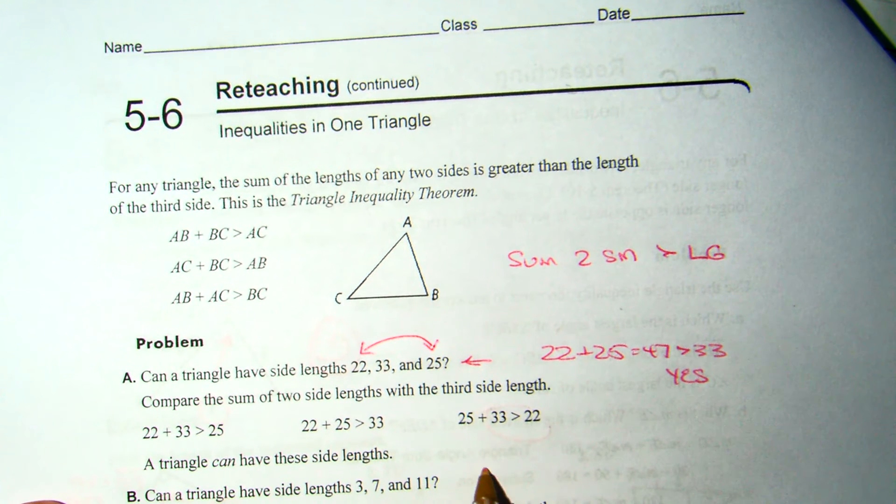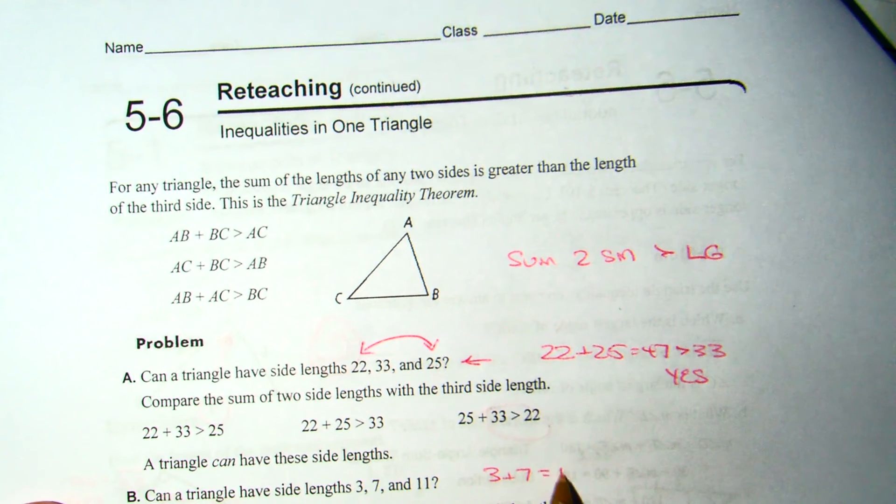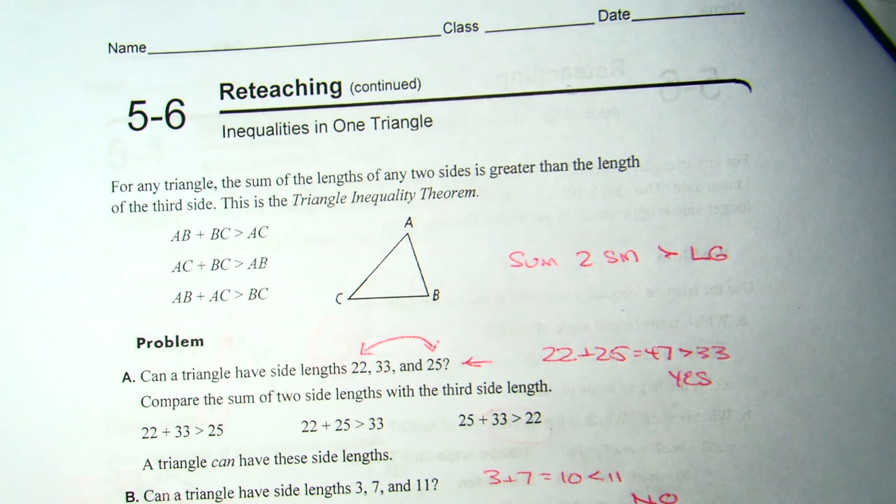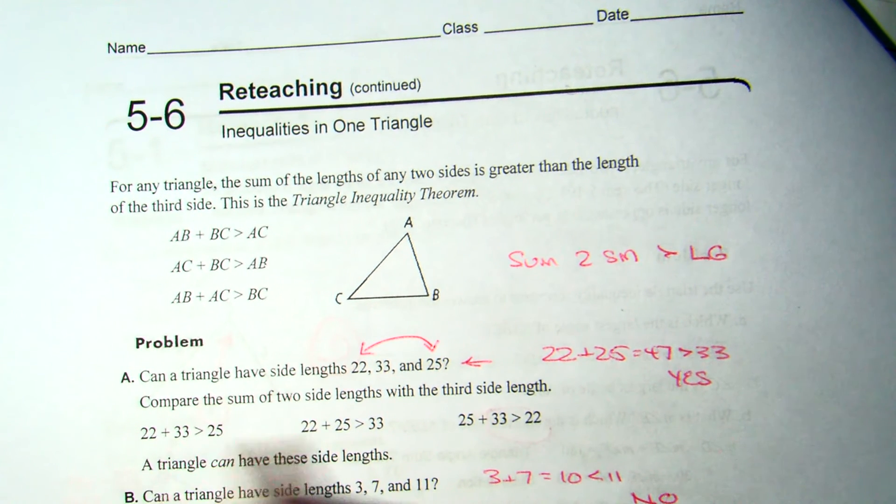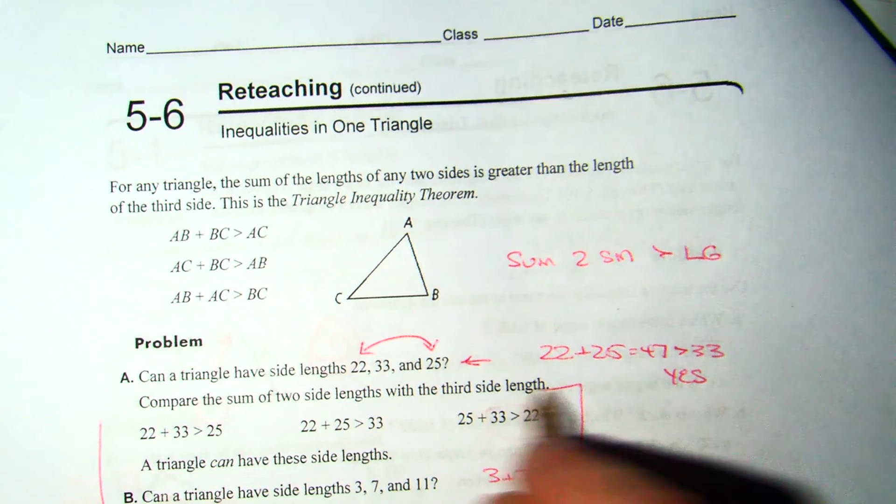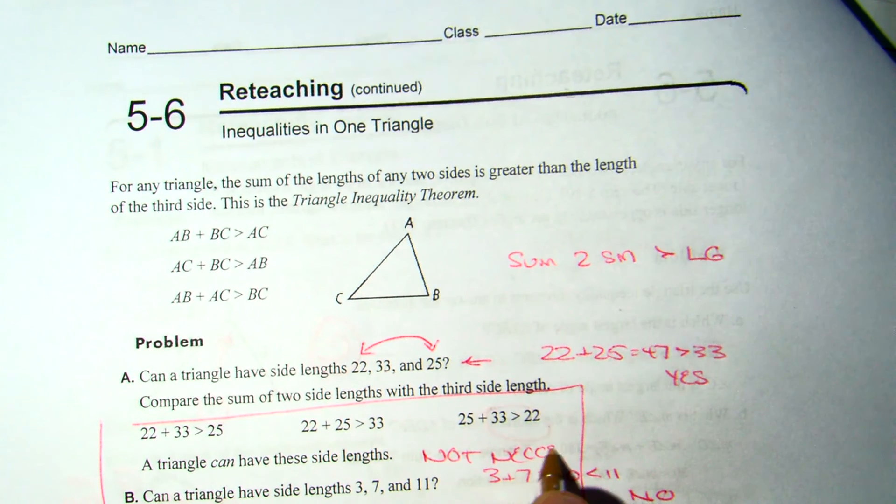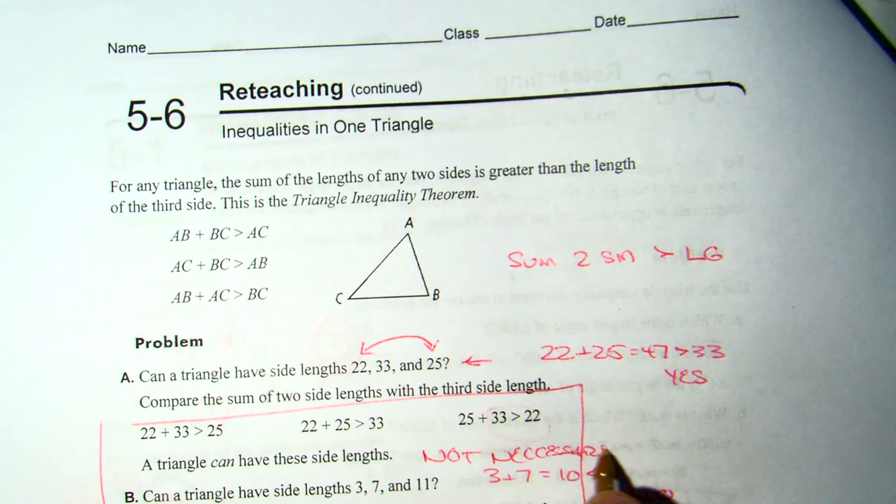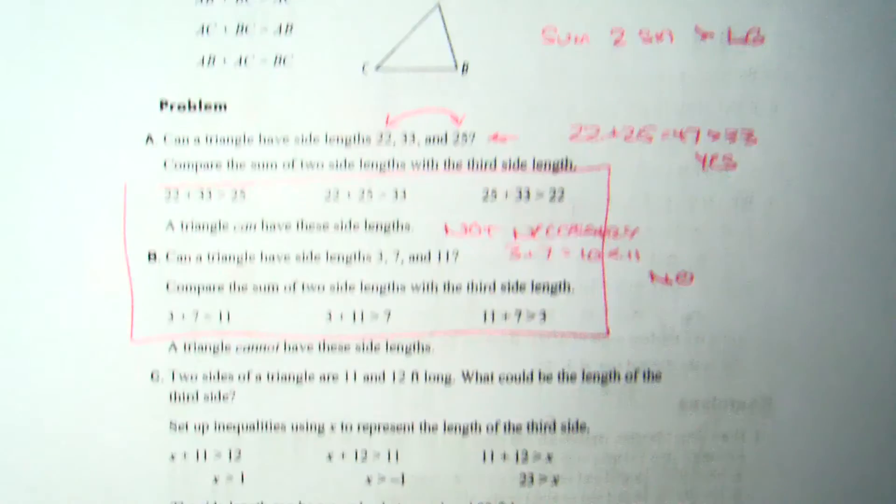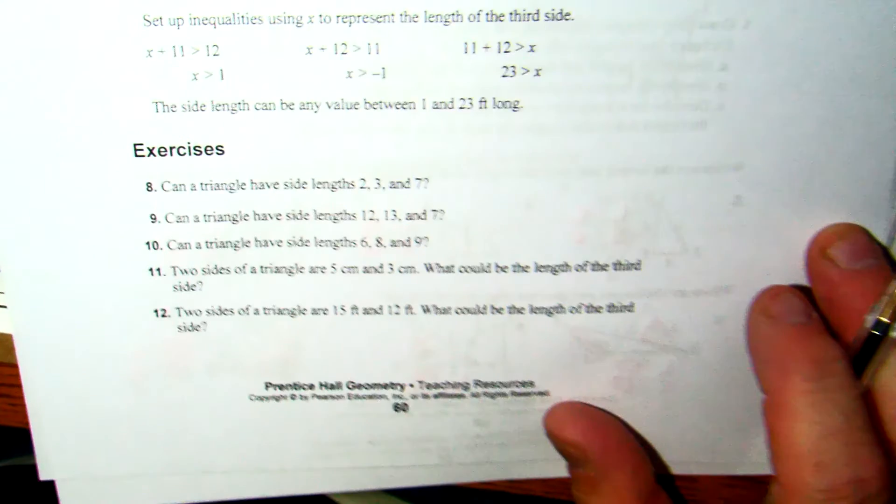3, 7, and 11. 3 plus 7 is 10. Since 10 is less than 11, the third side, the answer is no. You do not need to do all three. Not necessarily. All you have to do is take the two smalls. If they're bigger than the longest, then it works. So another speed round.